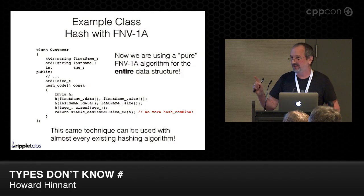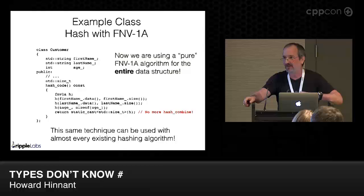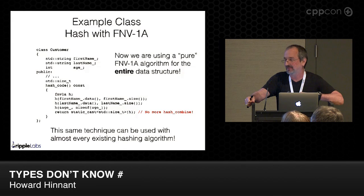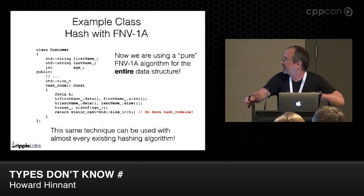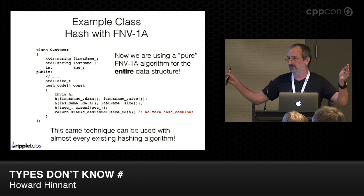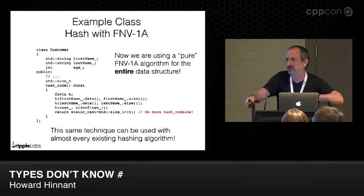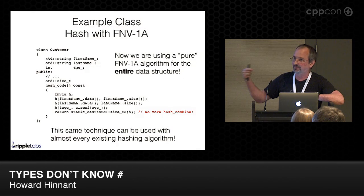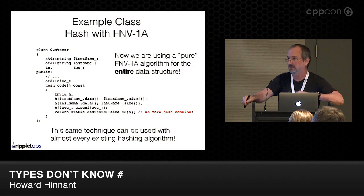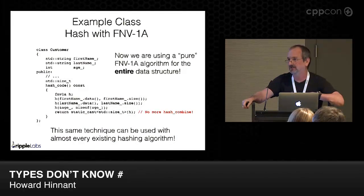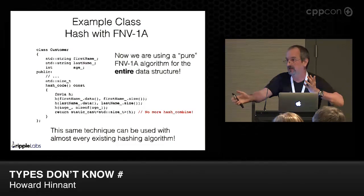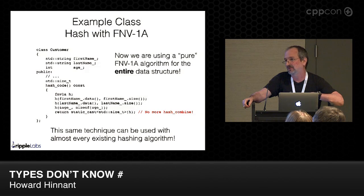There is one hashing algorithm on the planet that I found this technique does not work well with, and that is CityHash. CityHash is a great hashing function but it has a property that it wants to see the entire length of the memory right up front. The only way to really use this technique with CityHash would be to store the bytes in a vector and then do everything at once — that would be ridiculously expensive. You don't really want to be allocating memory under your hash function.